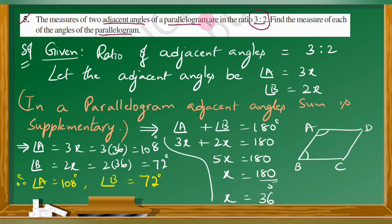Now find the measure of each of the angles of the parallelogram. We have a property: in a parallelogram, adjacent angles are supplementary, meaning they sum to 180 degrees. The adjacent angles are in the ratio 3 to 2. Let the adjacent angles be angle A equal to 3X and angle B equal to 2X.